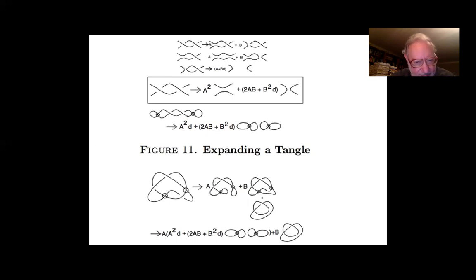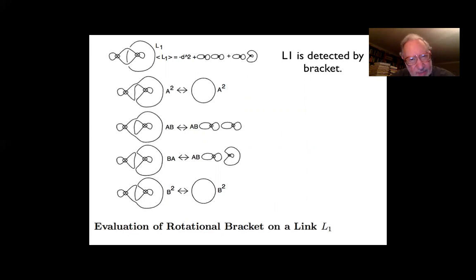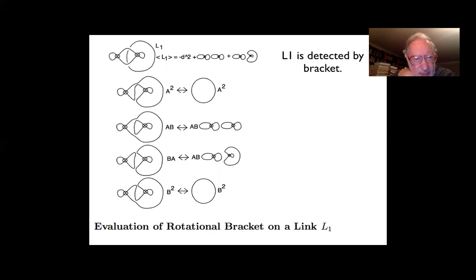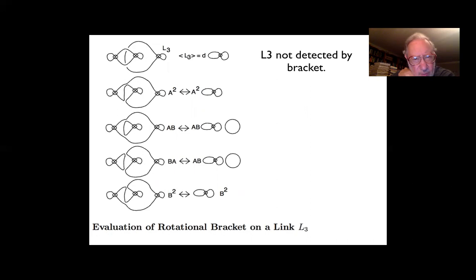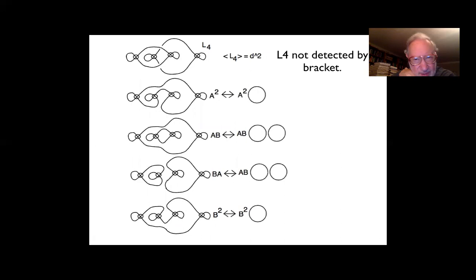Another example: A0 has a trivial Jones polynomial and basically trivial bracket polynomial, but viewed as a rotational virtual it's non-trivial. The curling and Whitney degree aspects of the expansion are detected in the course of working out the bracket. Some links — like a loop with two curls undercrossed by a circle — are detected by the bracket. But others, like L3 (one component with two curls, the other with one) and L4, are not yet detected by the bracket.